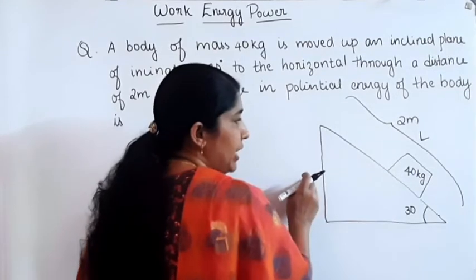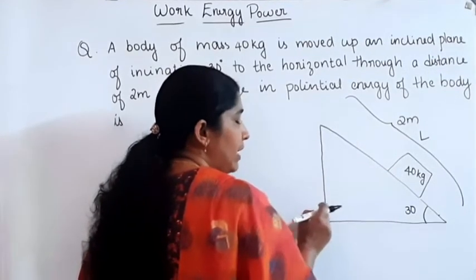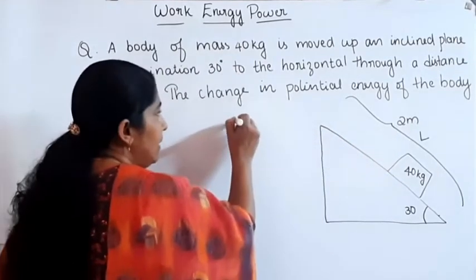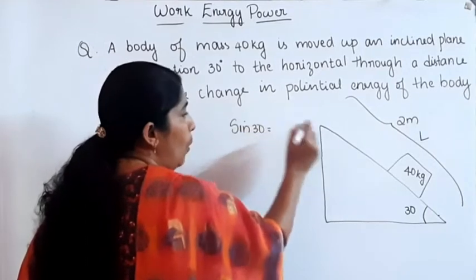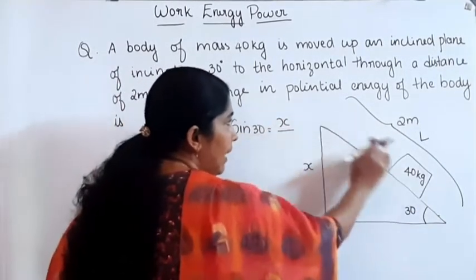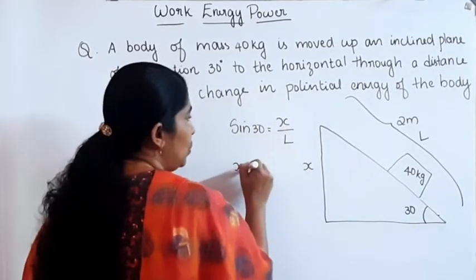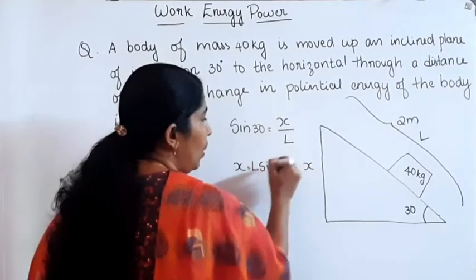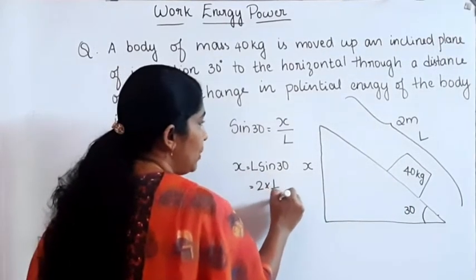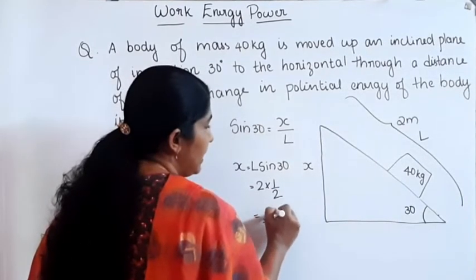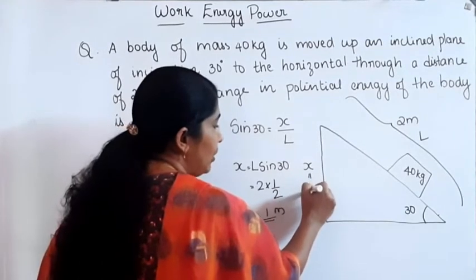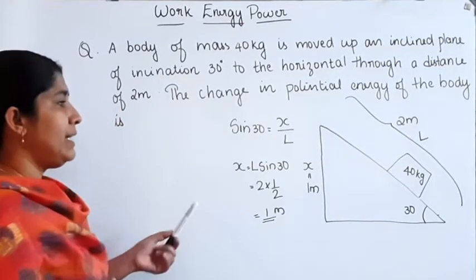To find the height, from trigonometry: sine 30 equals opposite side divided by hypotenuse, so X equals L × sine 30. L equals 2 meter and sine 30 equals 1/2, so X equals 1 meter. This distance X is the height of the inclined plane, equal to 1 meter.